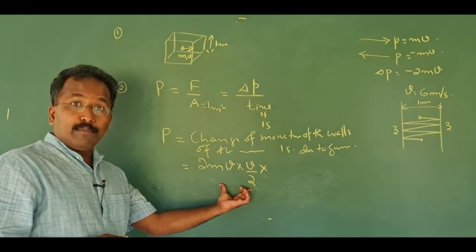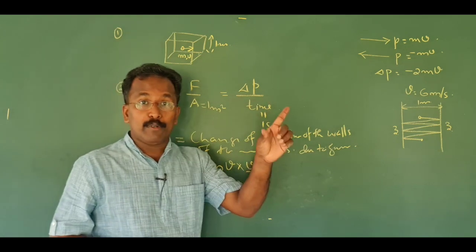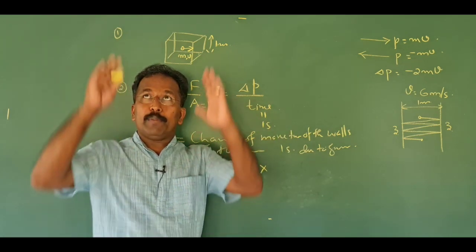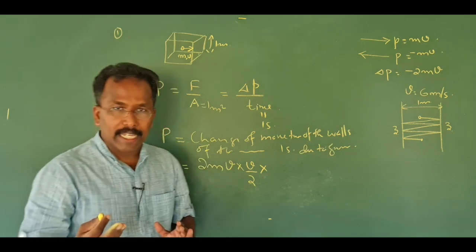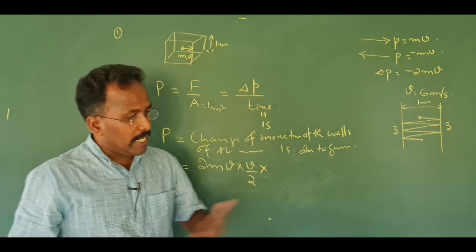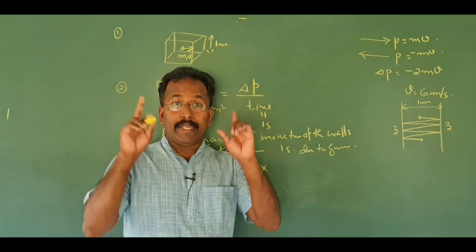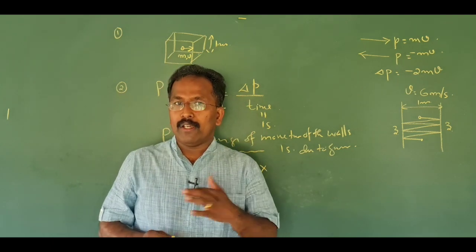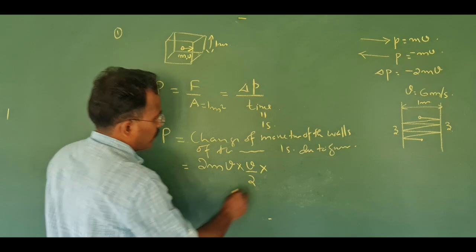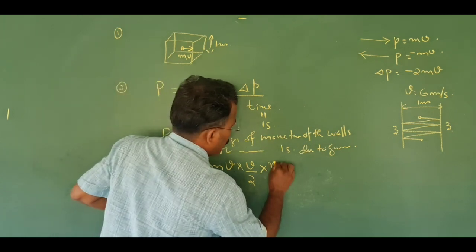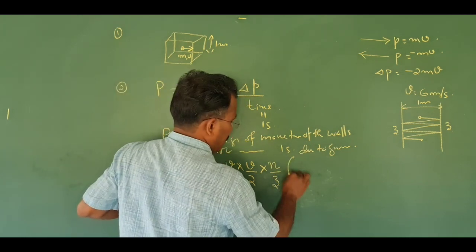If you have a gas molecule, you can take three sides of it: x-direction, y-direction, z-direction. If you have a gas molecule, you can take three sides — that's normal. Into n by 3.